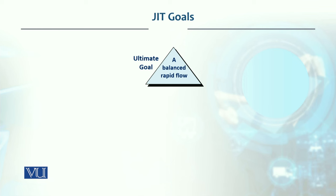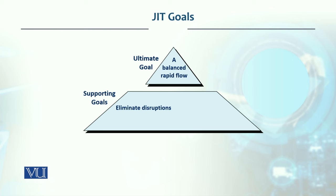The ultimate goal of just-in-time, if we look at it, is a balanced system which has rapid flow of material and information — that is the ultimate goal, the system we want. Among the supporting goals we will achieve: disruptions must be eliminated, there should be no disruptions, because disruptions bring variability. The system should be made flexible so it can handle any changes in the environment, and waste should be eliminated.